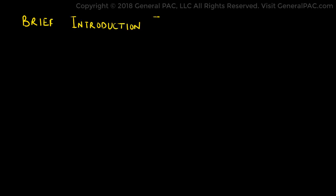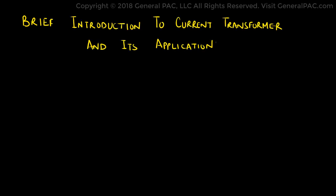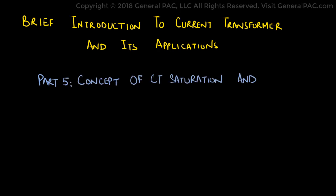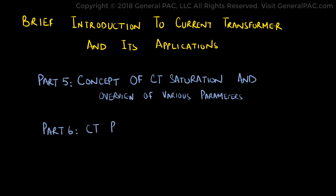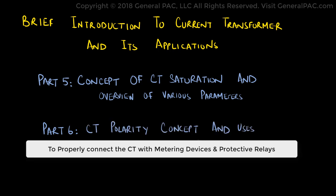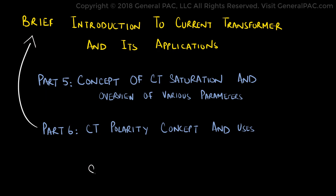This is a brief introduction to current transformers and their applications. In part 5, we talked about the concept of CT saturation, including a brief overview of the various parameters involved. In part 6, we will discuss the concept of CT polarity and how it can be used to properly connect the CT with metering devices and protective relays.